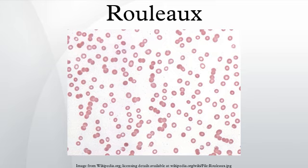Rouleaux formations are also adopted by spermatozoa as a means of cooperation between genetically similar gametocytes so as to improve reproductive success through enhanced motility and, therefore, fertilization capacity — for example, in the guinea pig.